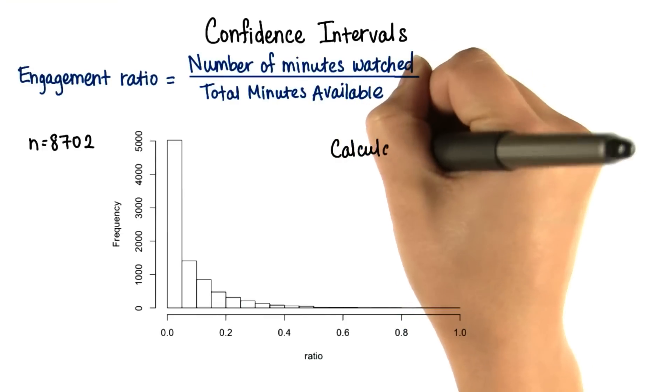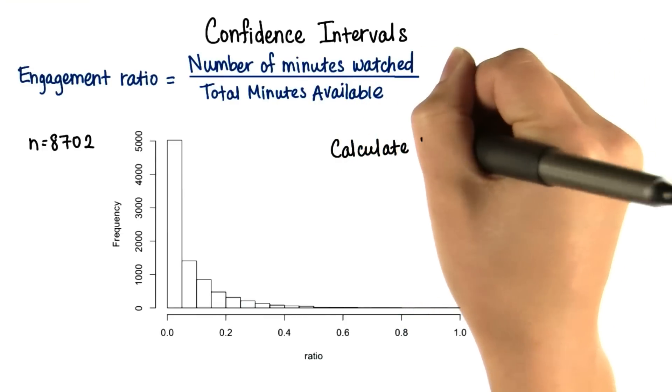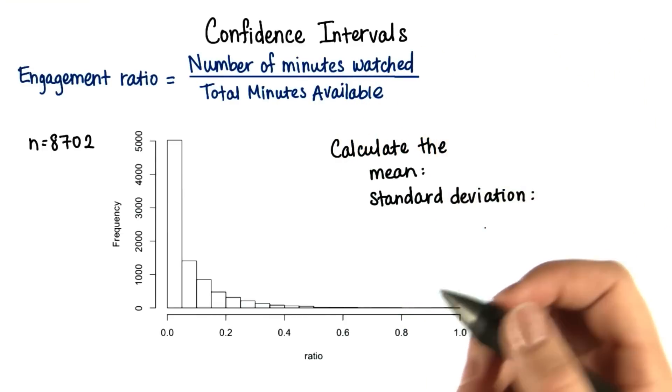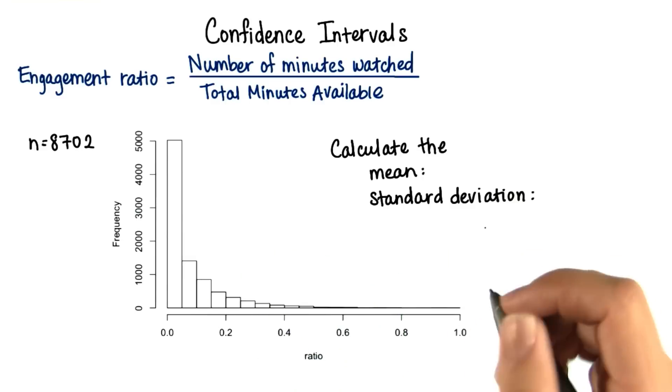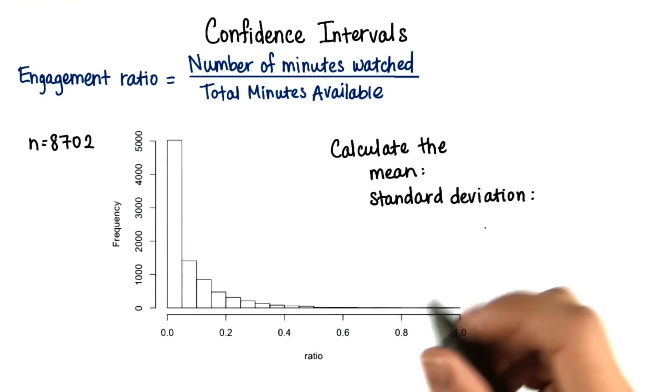So first of all, calculate the mean and standard deviation for this data. This is a pretty big data set, so try to make use of the keyboard shortcuts that you've learned before. Treat this as a population, and round to the nearest thousandths, or three decimal places.